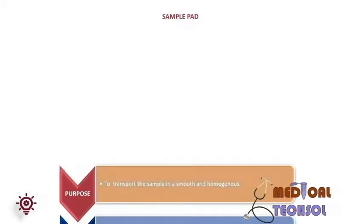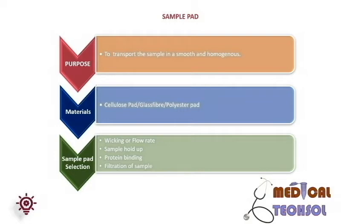The sample pad's function is to absorb and transport the sample in a smooth and homogeneous manner. It should retain very little sample. General materials used are cellulose, glass fiber, or polystyrene pad. Factors considered for sample pad selection are flow rate, sample holding volume, protein binding, and filtration of the sample. Filtration is aided by adding protein, detergent, or salt to reduce non-specific binding, increase sample viscosity, change pH, and filter red blood cells (RBC). This is achieved by adding an agglutinating agent into the sample pad. Treatment is usually done by dipping or spraying followed by drying.